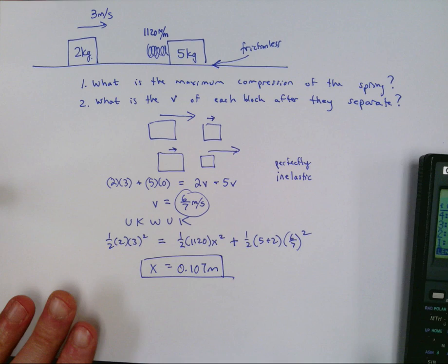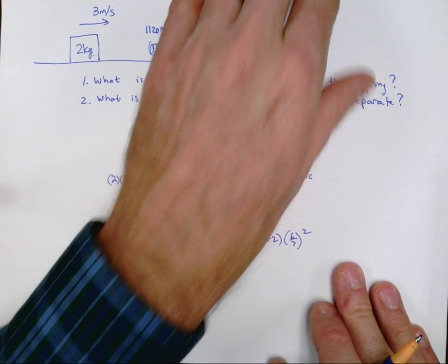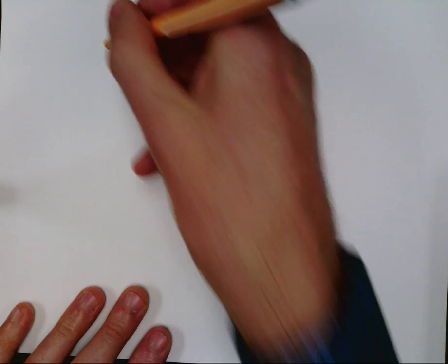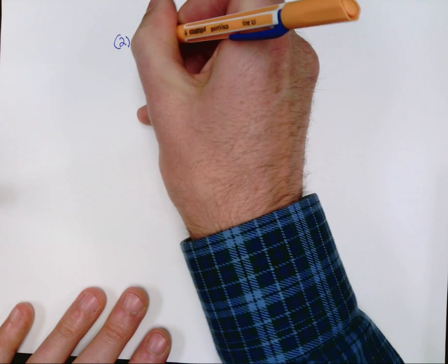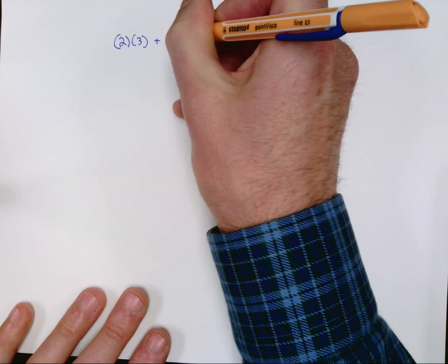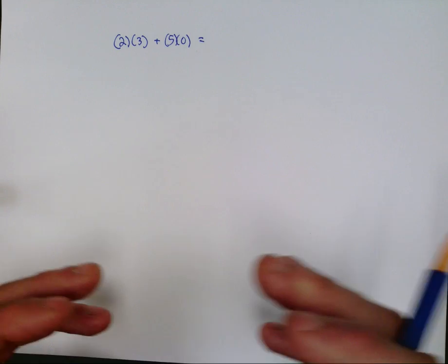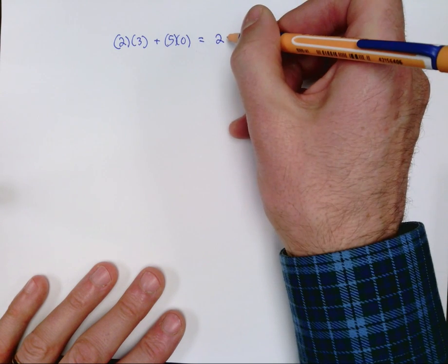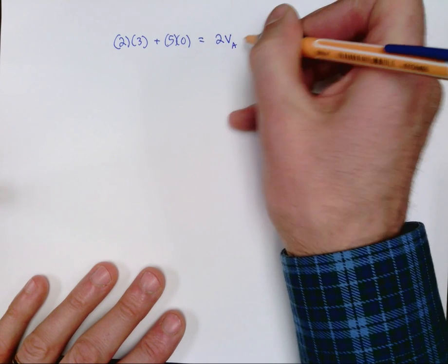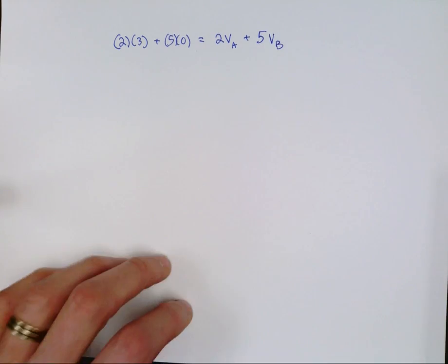Now, what about the second question? What is the speed of each block after they separate? Well, let me grab another page here. We can look at that from a momentum point of view because the initial block had a mass of two kilograms, had a speed of three. The other block had a mass of five and a speed of zero. So now we're saying after they actually bounce apart, what are their velocities? Well, that's going to give us two unknowns. So we have the two kilogram block times its unknown velocity, and the five kilogram block times its unknown velocity.